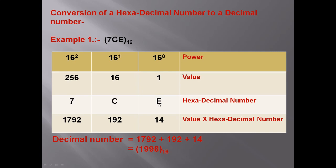Hexadecimal digit E has value 14, and C has value 12. We multiply each digit by its positional power value: 14 multiplied by 1 equals 14. C value is 12; 12 multiplied by 16 equals 192. Then 7 multiplied by 256 equals 1792.